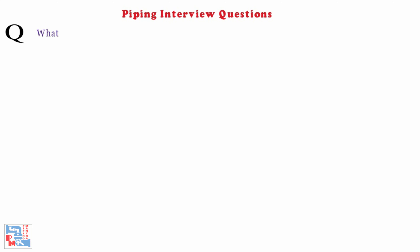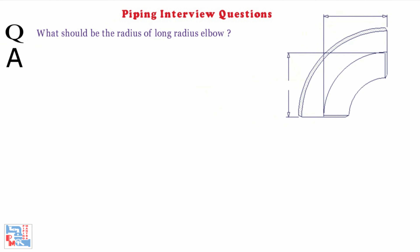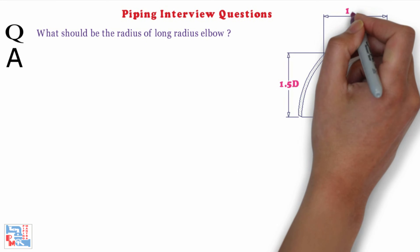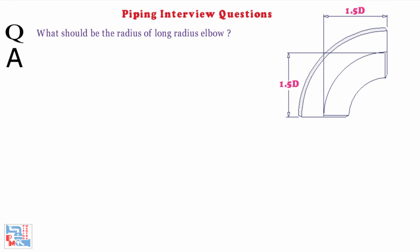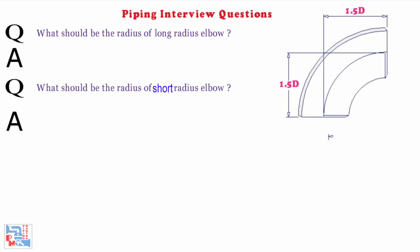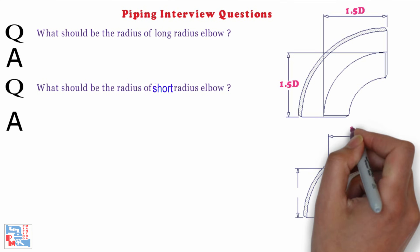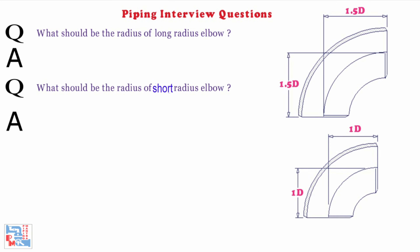Next, what should be the radius of a long radius elbow? 1.5D, where D is the diameter of the pipe. Next, what should be the radius of a short radius elbow? It should be 1D, where D is the diameter of the pipe.